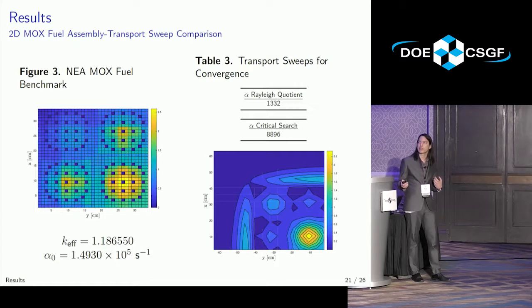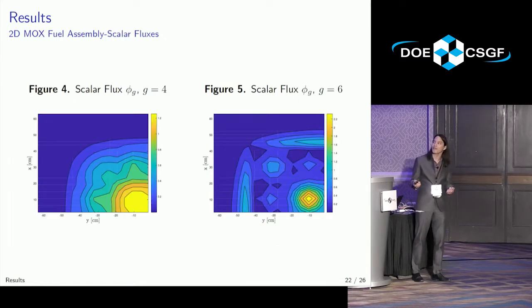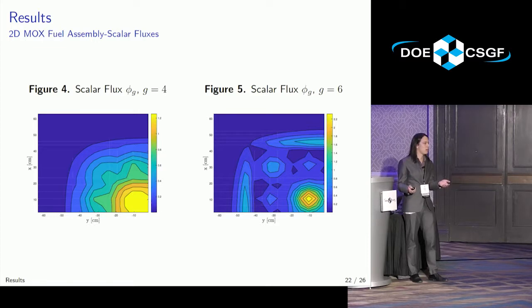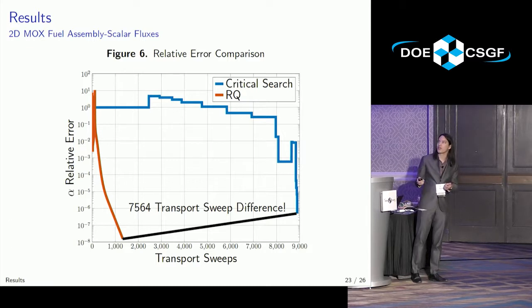The Rayleigh quotient method reduces that by a factor of about seven. We get these beautiful scalar flux plots. These are all positive, these are the parameters that users want, what designers want when they're designing a fuel assembly. And I just want to show, the critical search method does a lot of work for very little gain at each step. And the Rayleigh quotient method, being a fixed point nonlinear method, just immediately finds the fixed point and converges linearly.